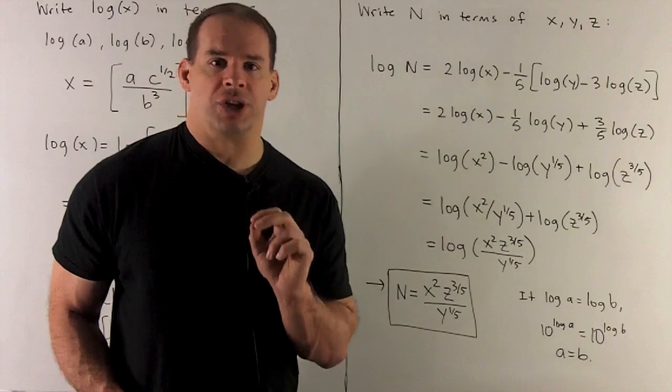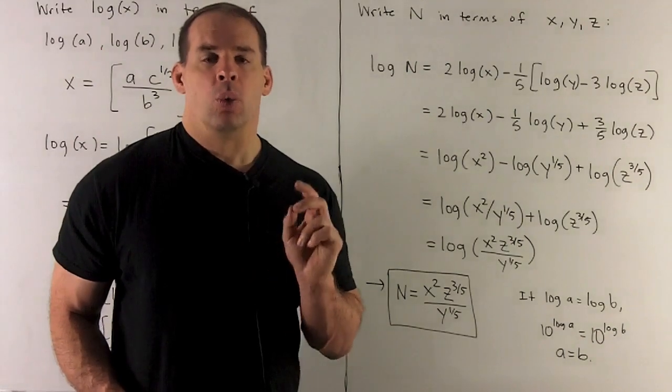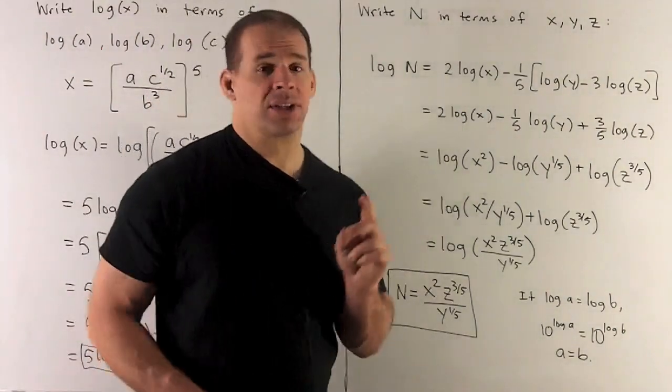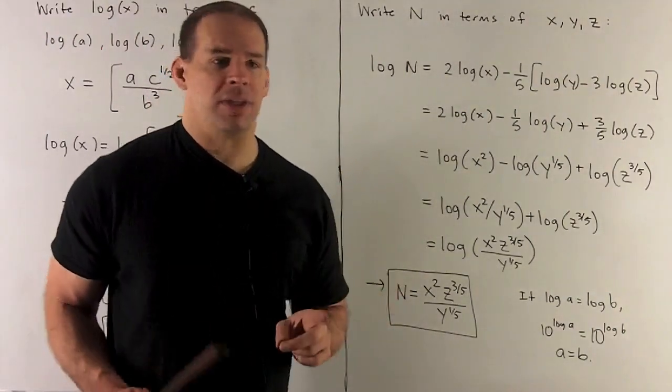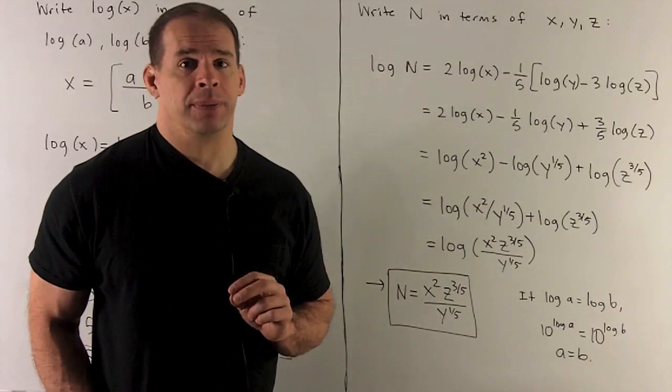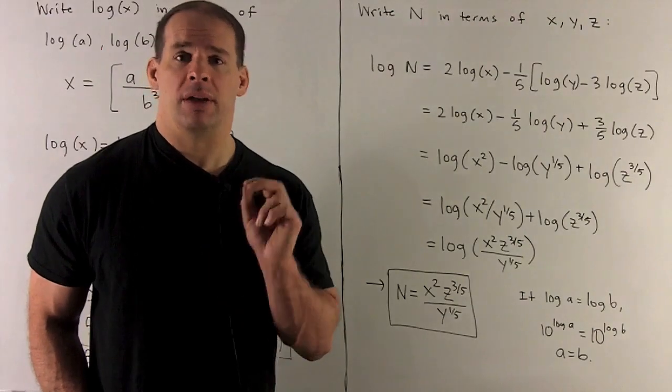In the other direction, write N in terms of X, Y, and Z, where log of N equals 2 log X minus a fifth parentheses log Y minus 3 log Z. So we're just going to go through all our steps from the previous problem in reverse order.